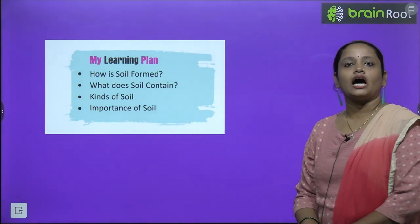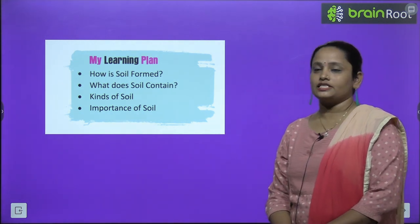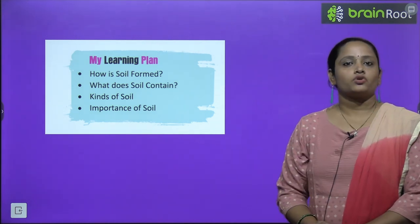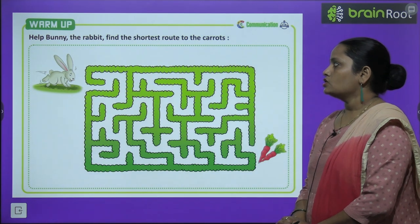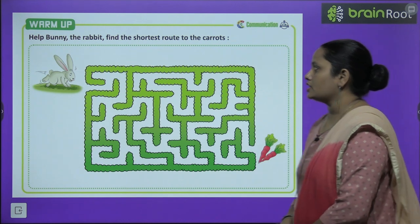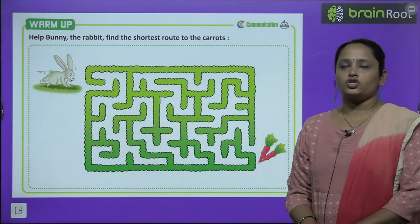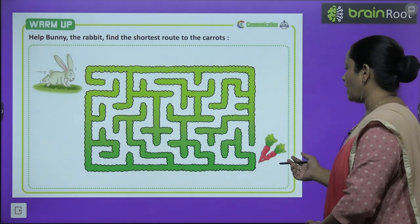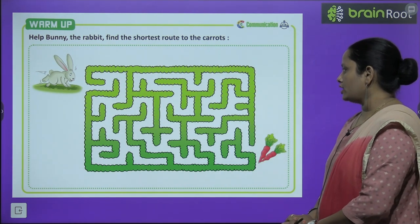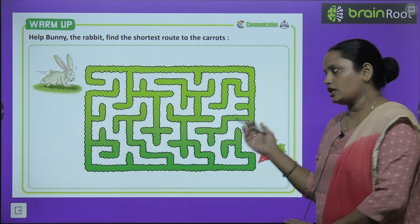In this chapter we are going to learn how is soil formed, what does soil contain, kinds of soil, and the importance of soil. So let's start with the warming up. Here you have to help bunny — there is a rabbit whose name is bunny. You have to find the shortest route to the carrots. You have to do it yourself.